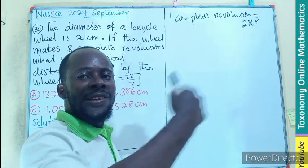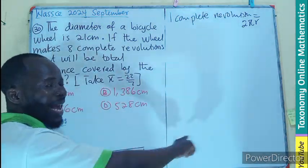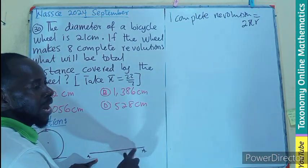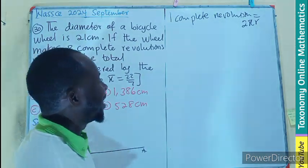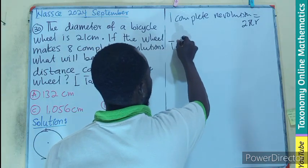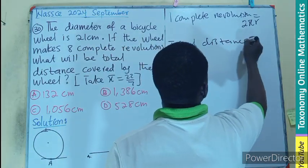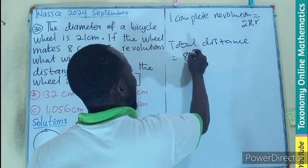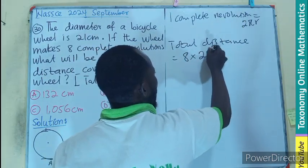But he has done 8 different times. Meaning this is 1, 2, 8 of them. 2πr, 8 different times. Meaning the total distance is going to be equal to 8 times 1 complete revolution, which is 2πr.